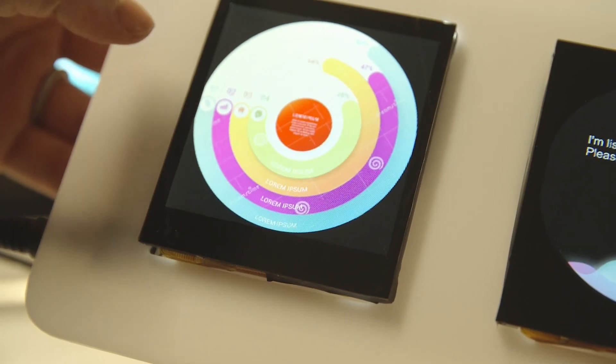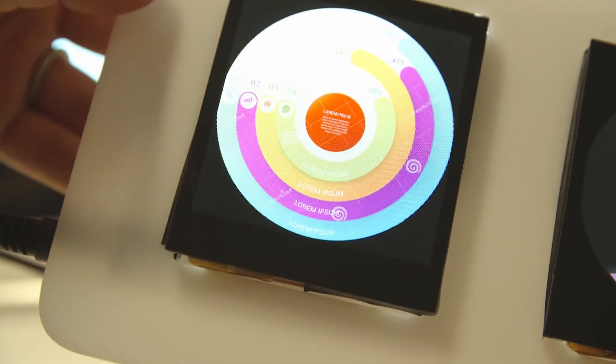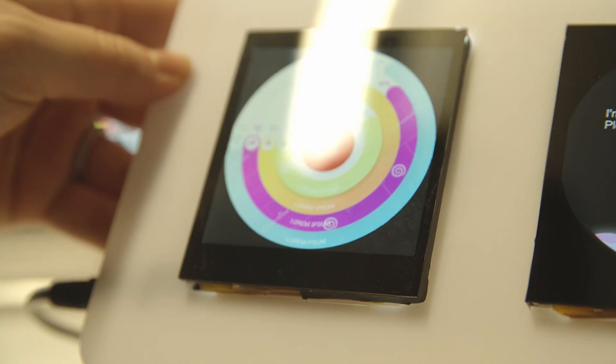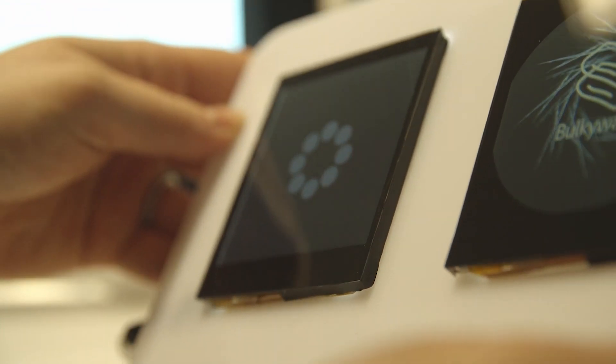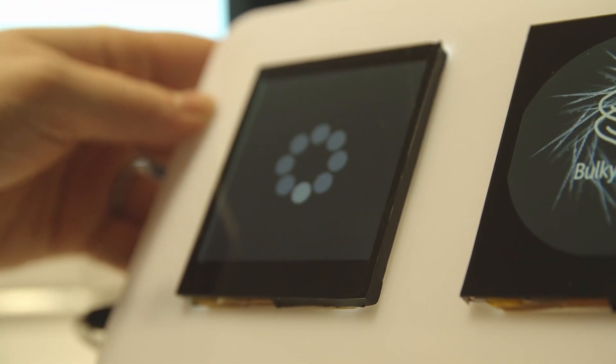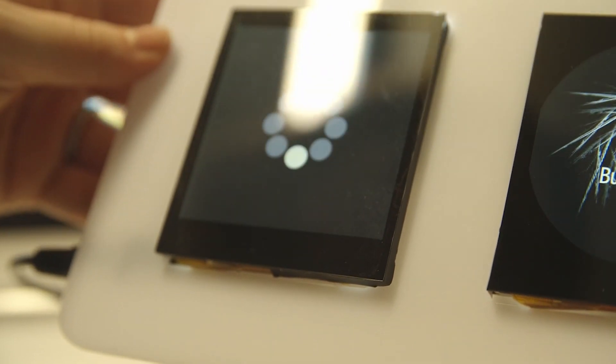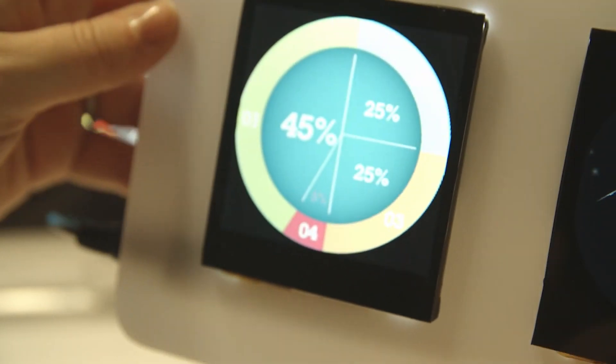We have seen in the past user interfaces with displays that appear to be round, but if we look at the enclosure, the enclosure itself is either rectangular or square. This means that inside the enclosure is a rectangular display. It's just the cutout, the aperture, that is made into a round shape, and all the information that the customer wants to display is made to appear inside the circle.